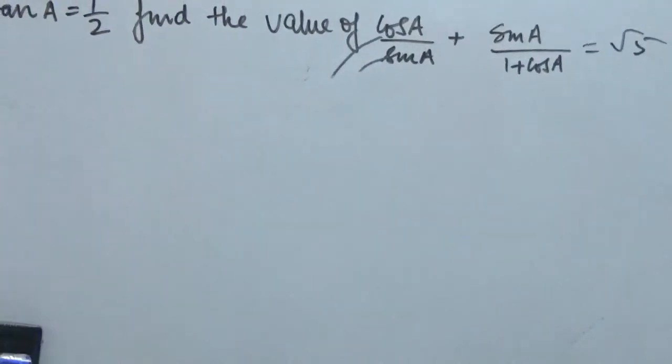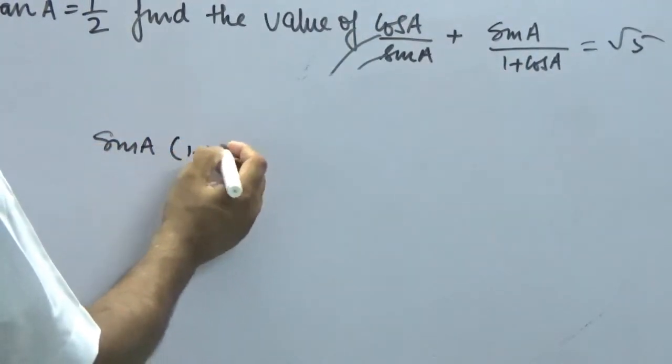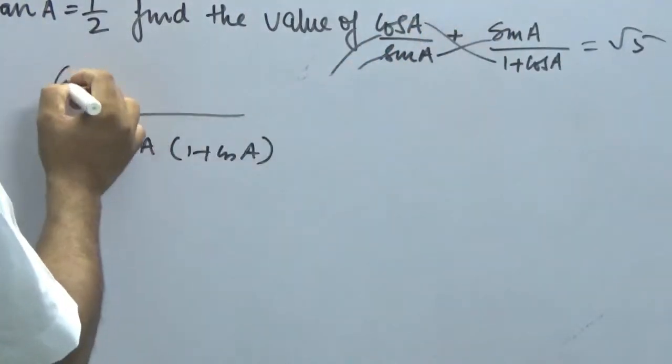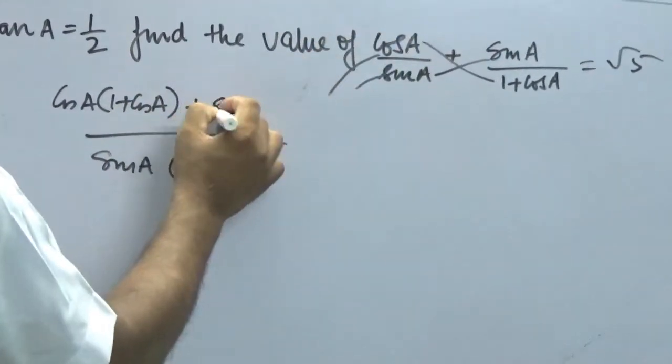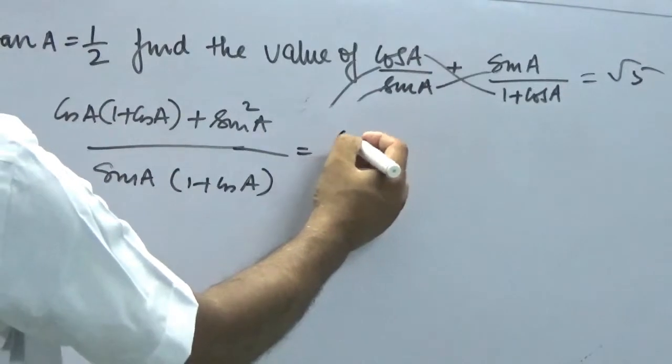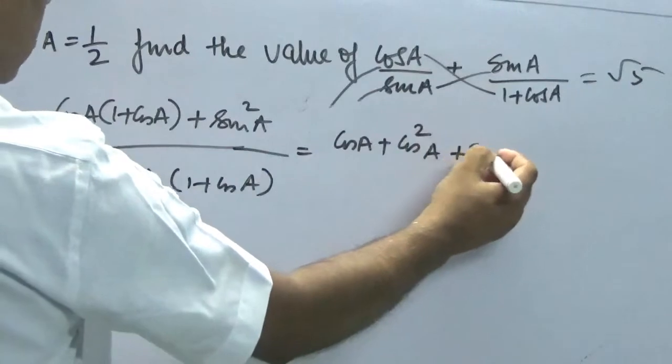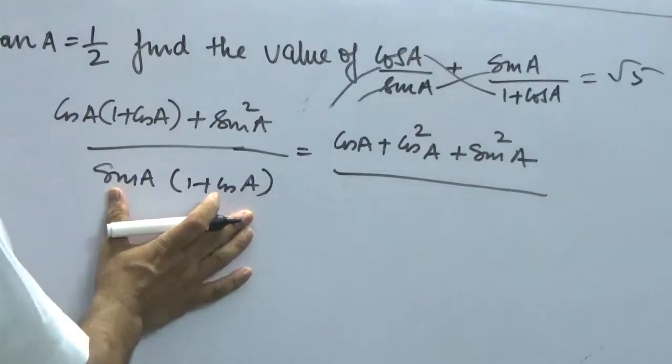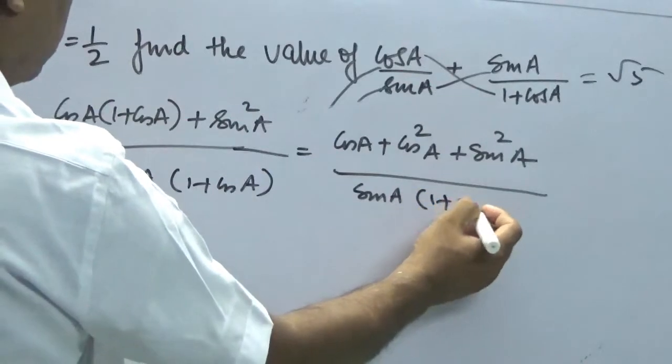Now here we have cos A/sin A + sin A/(1 + cos A). Take the LCM: sin A(1 + cos A), and then it gets multiplied: cos A(1 + cos A) and then sin A into sin A is sin²A. Now let's open the bracket: cos A into 1 is cos A, plus cos A into cos A is cos²A, plus sin²A, divided by sin A(1 + cos A). Now let's not do anything here. Keep it as it is. Later on it will get cancelled.